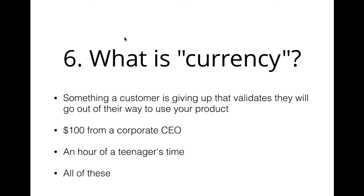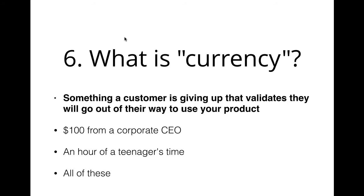Looking at $100 from a corporate CEO or an hour of a teenager's time — do they fit the first sentence? No, they don't really fit. A corporate CEO is really wealthy; they can easily give you $100 just to get you to bug off. A teenager has a lot of time, so they're happy to give you an hour. It's really about what that customer considers valuable to them. The CEO isn't giving up anything by giving you $100, just like a teenager isn't giving anything up by giving you an hour. So the correct answer is the first one: something a customer is giving up that validates they will go out of their way to use your product.